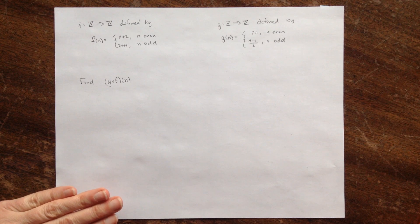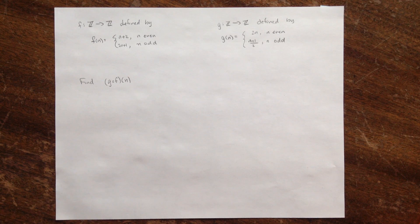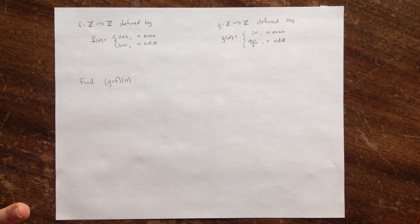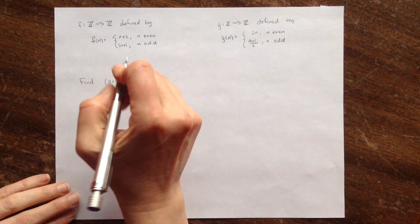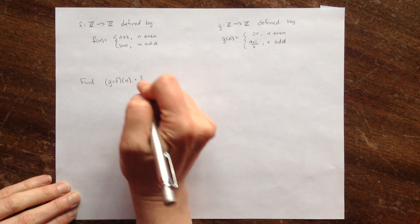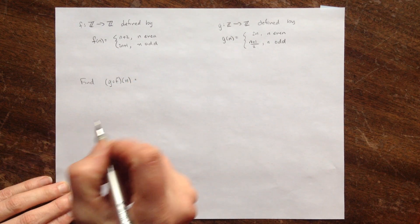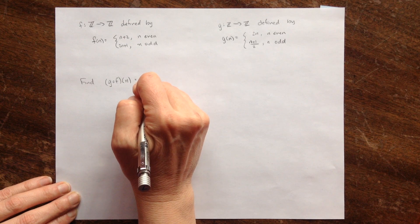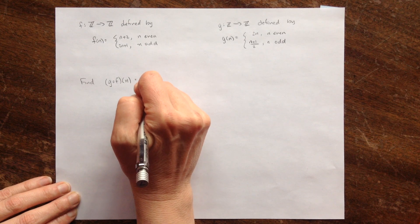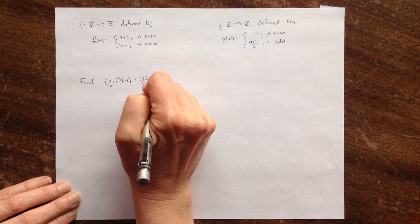Now you have a feel for these functions and I want to find the composition — a rule, a definition — for the function g of f of n. This is going to be a function from the integers to the integers, and I'm going to do this by first writing this as g of f of n.